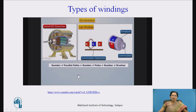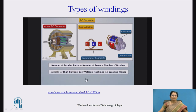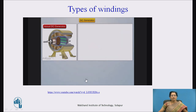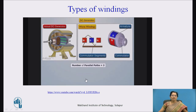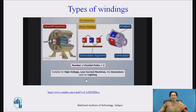For lap winding, the number of parallel paths equals the number of poles, which equals the number of brushes. Lap winding is suitable for high current, low voltage machines like welding plants. For wave winding, the number of parallel paths equals 2. This winding is suitable for high voltage and low current machines like generators used for lighting.